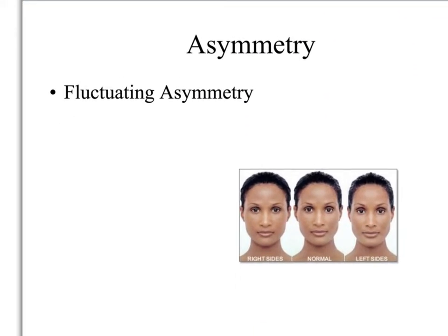First we'll talk a little bit about asymmetry. Asymmetry is defined as an unequal distribution around some sort of plane. Humans are bilaterally symmetric, meaning our right and left halves should be roughly equal. Research from plants and animals suggests that the more evenly distributed an animal is around that bilateral axis, the better condition they're in. Animals in poor condition tend to be asymmetric, and animals in good condition tend to be symmetric.